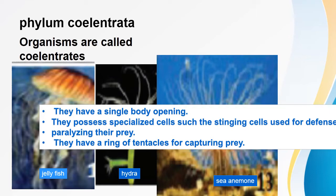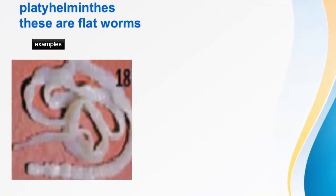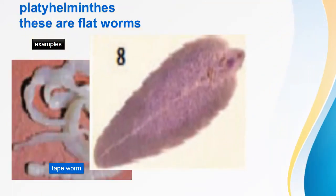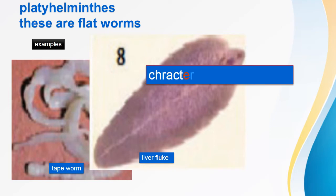The next phylum is Phylum Platyhelminthes — 'platy' means flat. Organisms in this phylum are called flatworms. Examples include tapeworm and liver fluke. Characteristics of flatworms: they have a dorsoventral body — the upper and lower parts of the body are flat. They are damp, moist, or aquatic dwellers. Their body wall has three layers of cells.